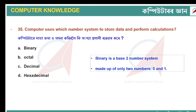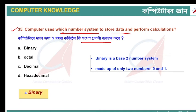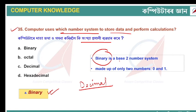Computer uses which number system to store data and perform calculations? The answer is the binary system. In our daily lives we use the decimal system with digits 0–9, but computers use a base-2 number system — the binary system — which uses only two digits: 0 and 1.